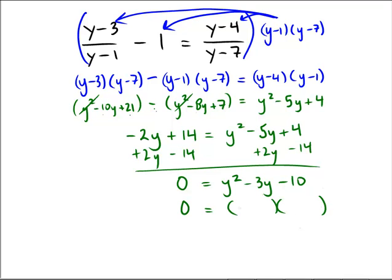Okay, lucky me. So, I guess we get y minus 5, y plus 2. And that means that by the zero product property, our solutions are either 5 or negative 2.